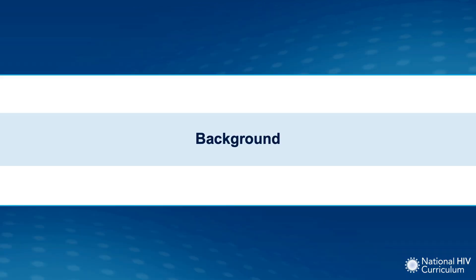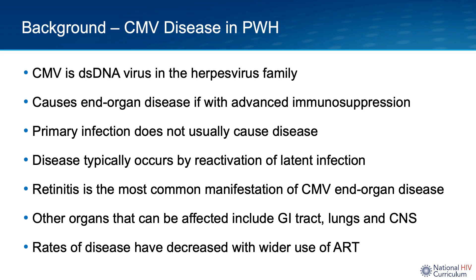CMV is a double-stranded DNA virus in the herpes virus family. Individuals are exposed to CMV typically via respiratory droplets, but you can also get exposure via sexual contact, blood transfusions, and organ transplants. Most of the clinical cases that we see in people with HIV occur due to reactivation of latent infection rather than a primary infection.